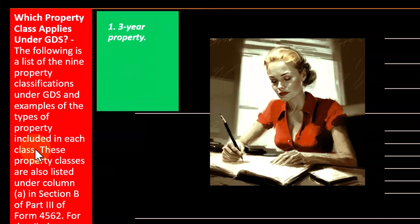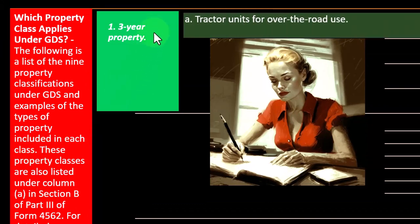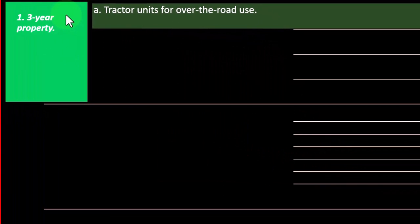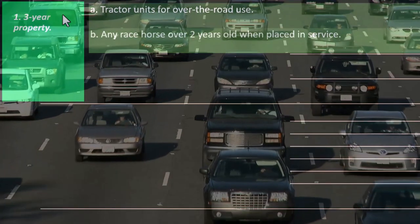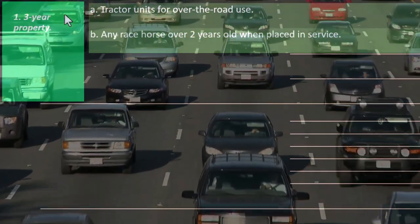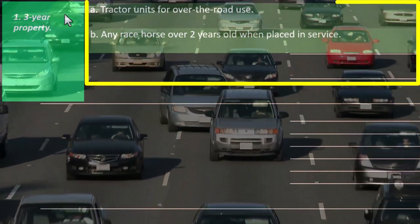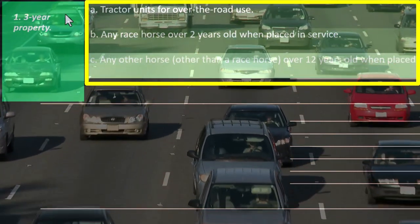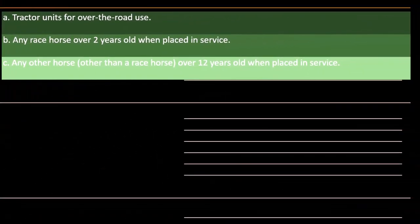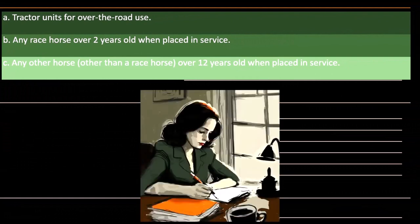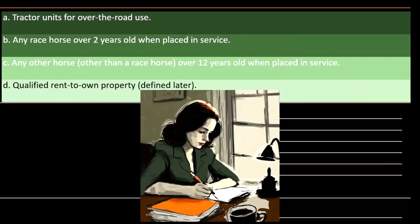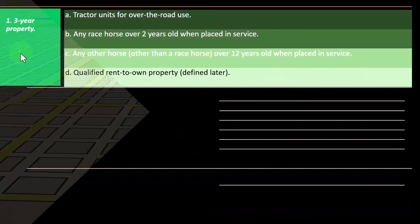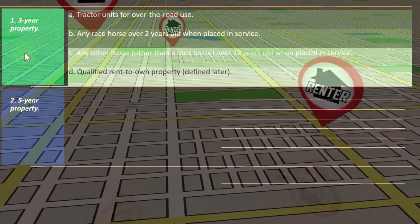Three-year property includes: tractor units for over-the-road use, any racehorse over two years old when placed in service, any other horse (other than a racehorse) over 12 years old when placed in service, and qualified rent-to-own property as defined later.